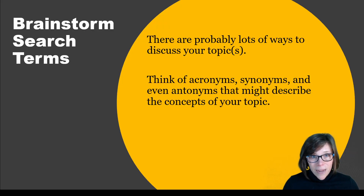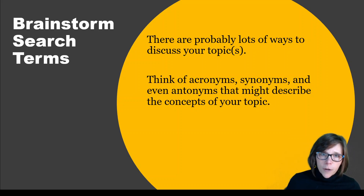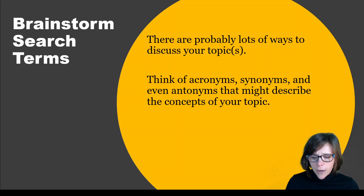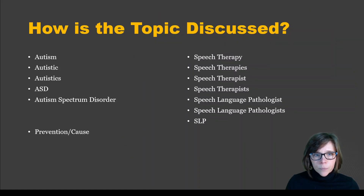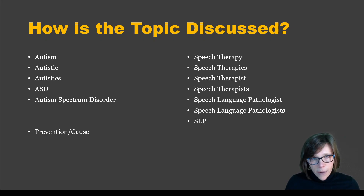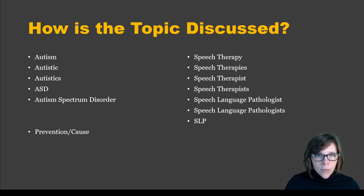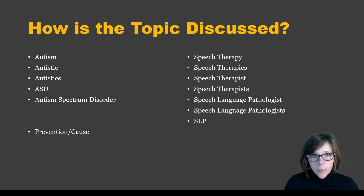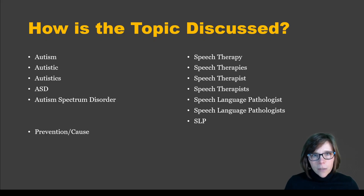Brainstorm your search terms — there are a lot of ways to say the same thing. Especially in health professions, you have synonyms, acronyms, initialisms, and different spellings. If you don't search with them, you're not going to find the literature. For example, autism might be referred to as autism spectrum disorder or ASD, and people diagnosed with autism might be called autistic or autistics. If you're looking for prevention of aphasia, you might also look at causes. And speech therapy could be speech therapist, speech language pathology, speech language pathologist, SLP, or language therapy. The narrower you can get, the better.